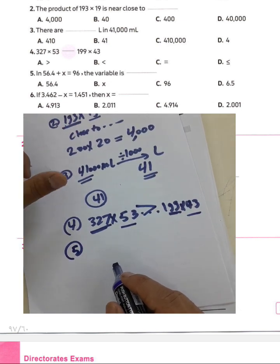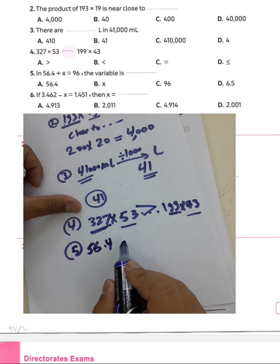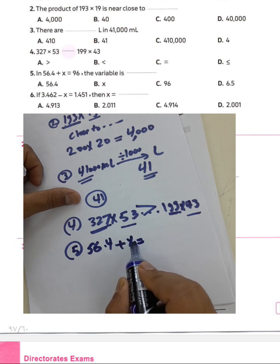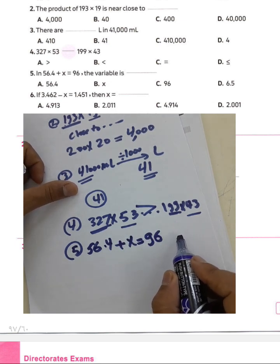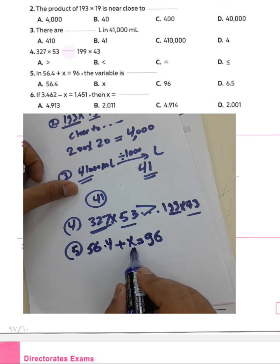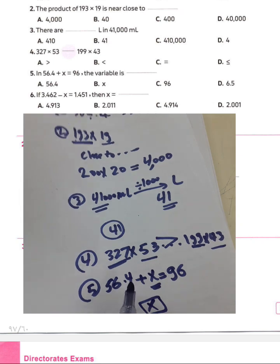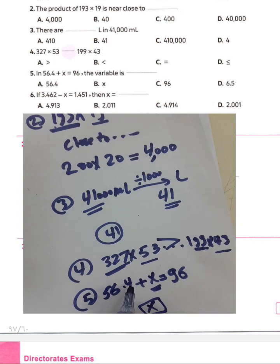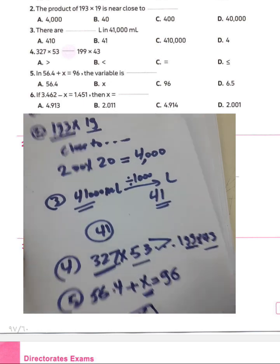Question number five: in the equation 56 and four tenths plus x equals 96, the variable x is called a verbal algebra term.